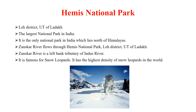It is located in the Leh district of Ladakh. It is the largest national park in India, and it is the only national park in India which lies north of the Himalayas. A river called Zanskar flows through Hemis National Park, which is a left bank tributary of river Indus. This national park is famous for snow leopards and has the highest density of snow leopards in the world.